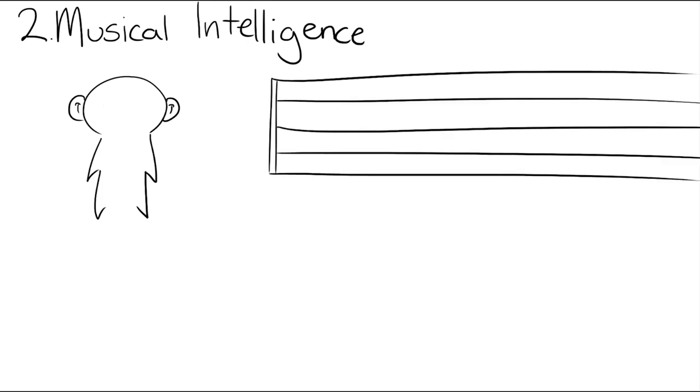Number two, musical intelligence. Having a high musical intelligence indicates you're very good at things to do with sounds. These can include characteristics such as rhythm, tone, and pitch.